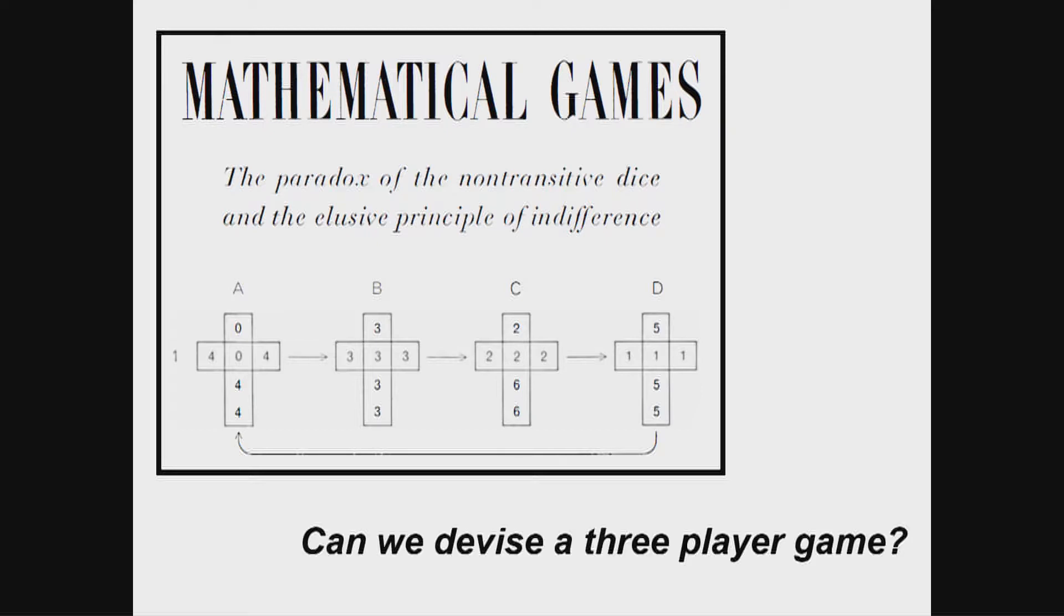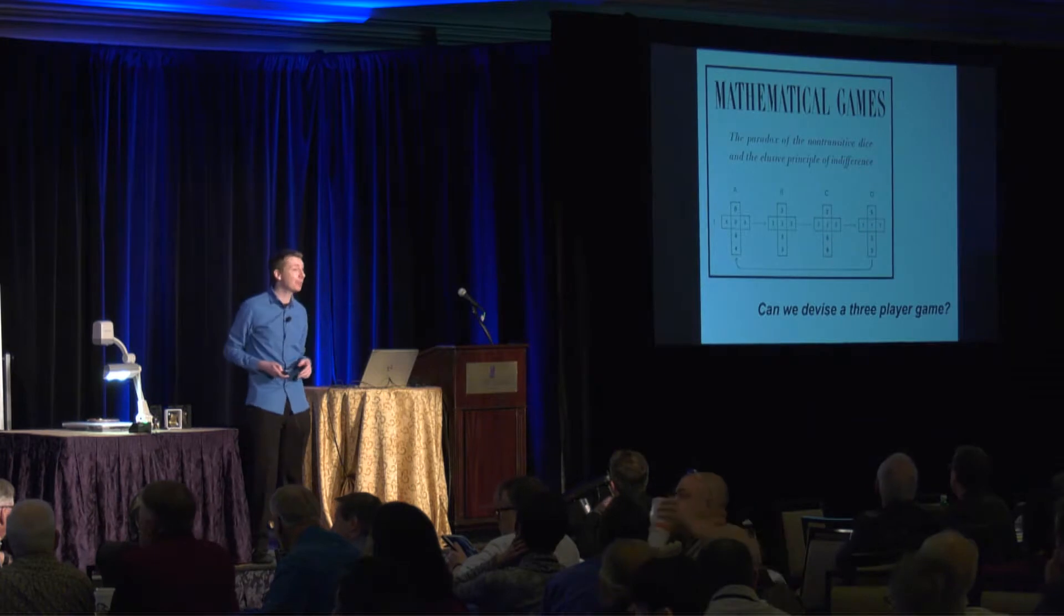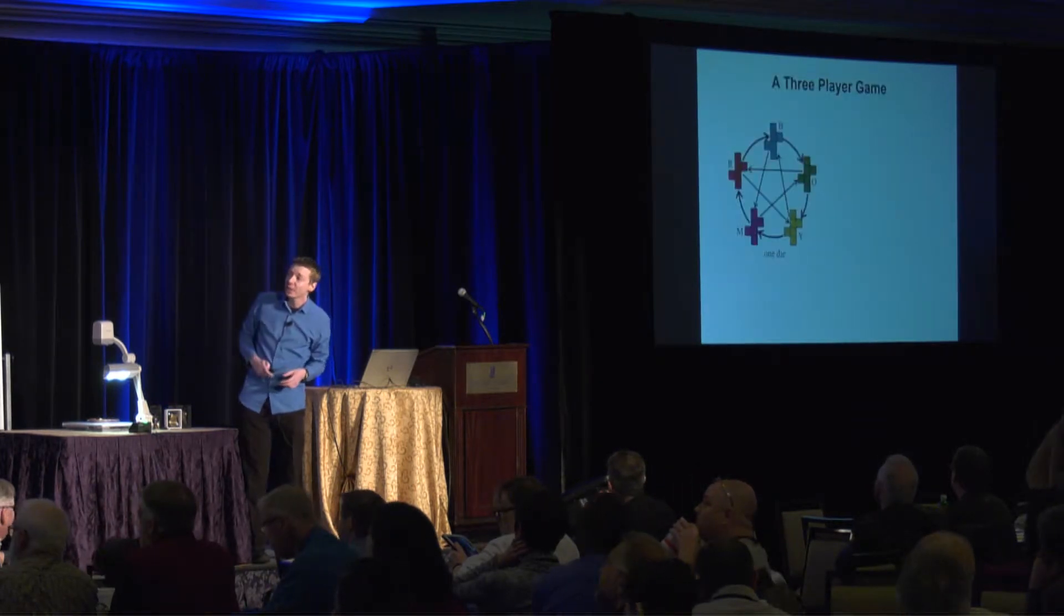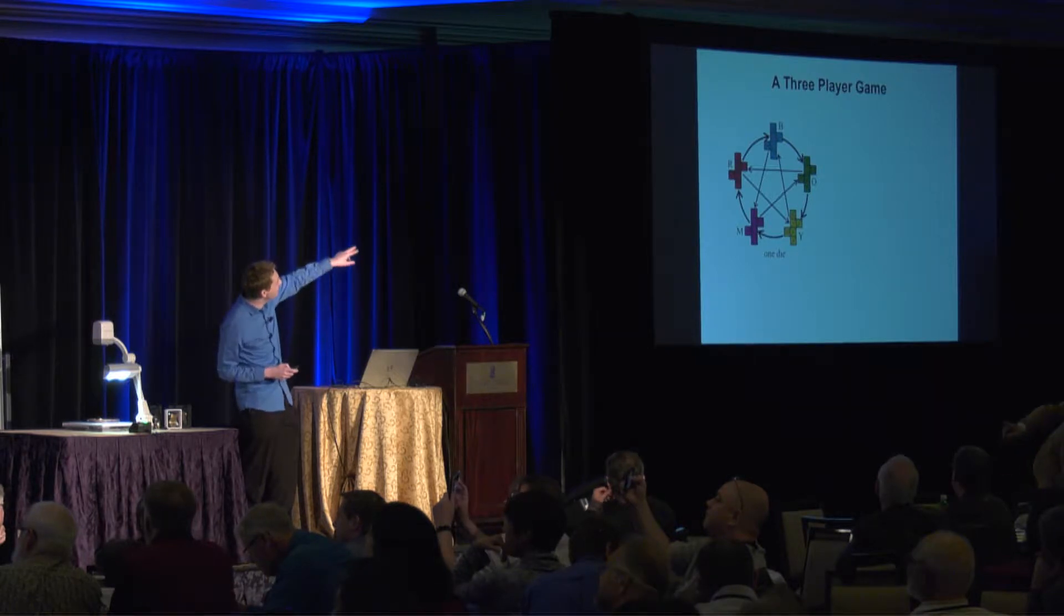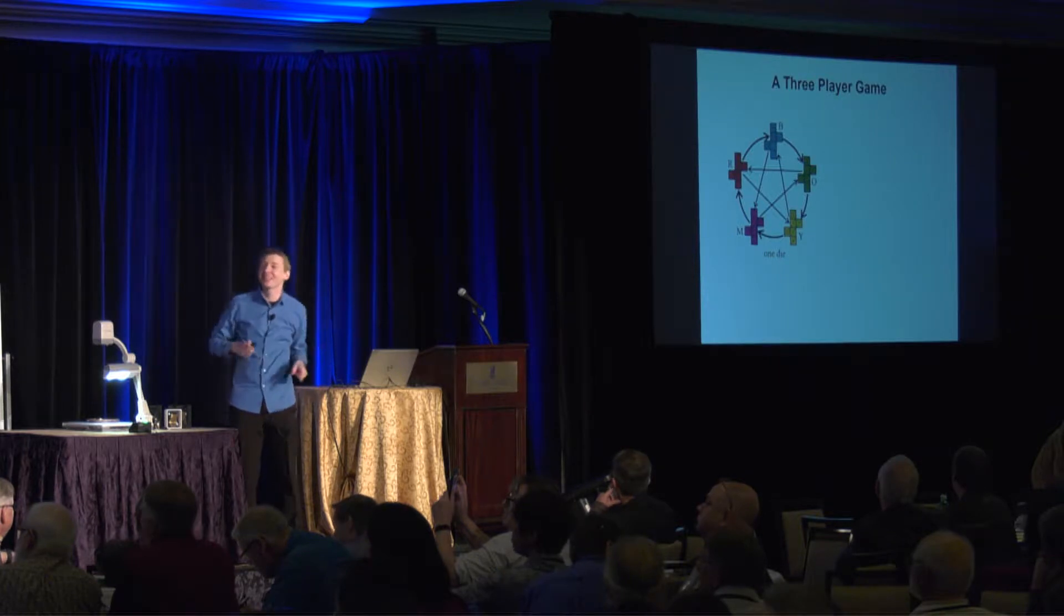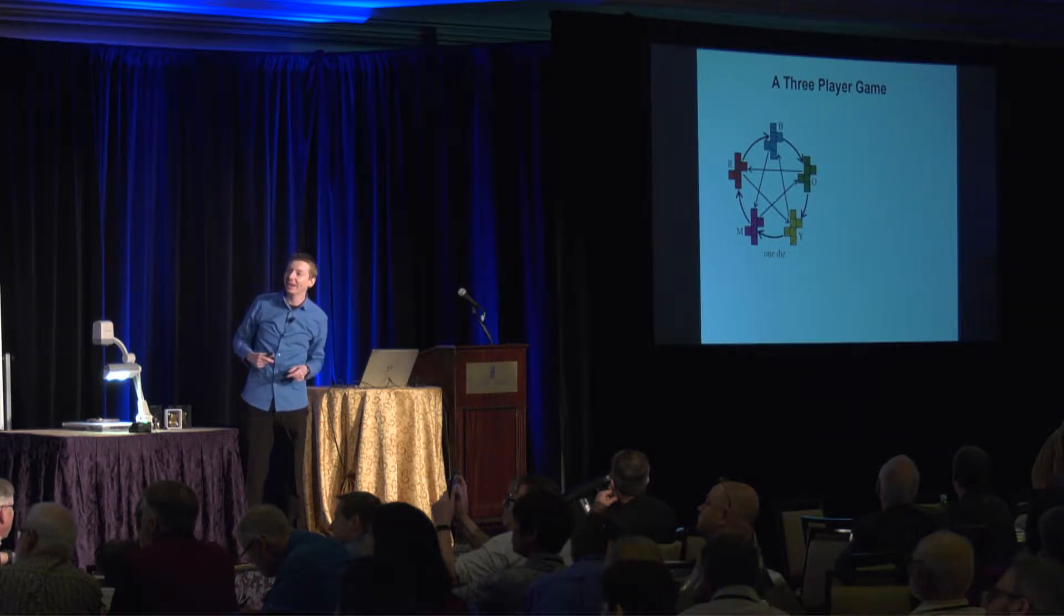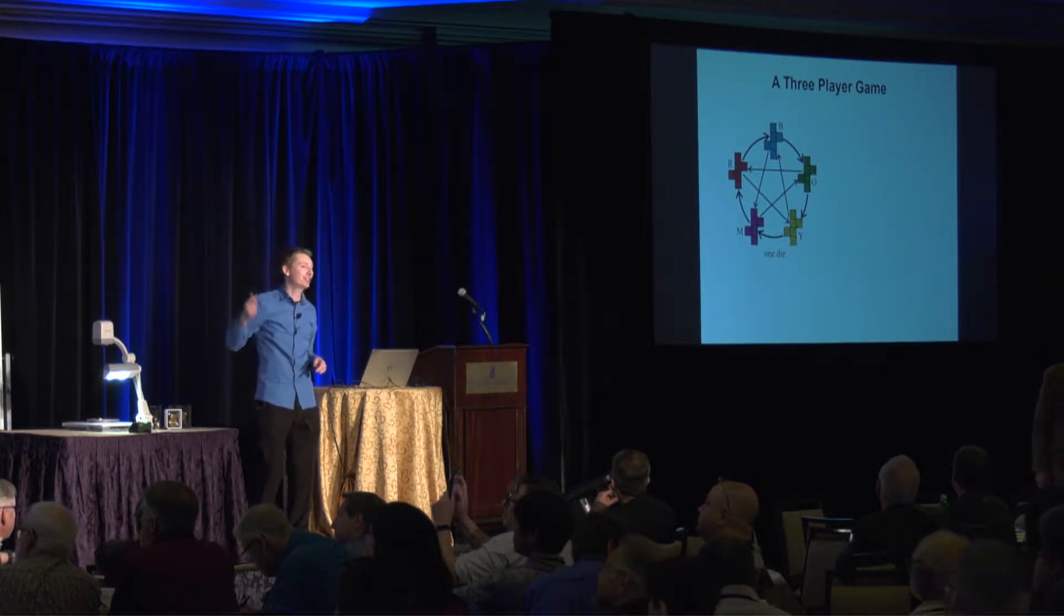But my question was, can I devise a three-player game so I can beat two opponents at the same time? So this was my solution to that question. So I devised a set of five dice. We've got here red, blue, olive, yellow, and magenta. And you may notice there are two chains. There's a circle going round the outside. And on the inside, there is a pentagram chain.